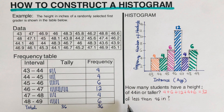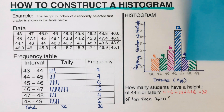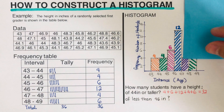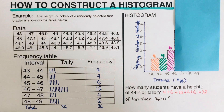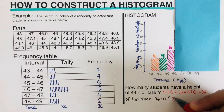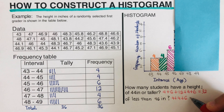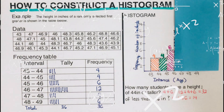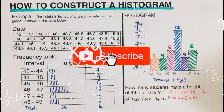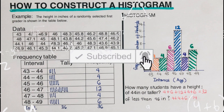Second question: how many students have a height of less than 46 inches? Less than 46 means to the left of 46. The frequencies we add are 4 + 4 + 6 = 14. If you found this video helpful, hit like and subscribe for more math videos — see ya!